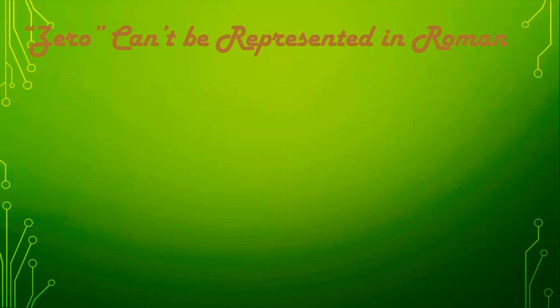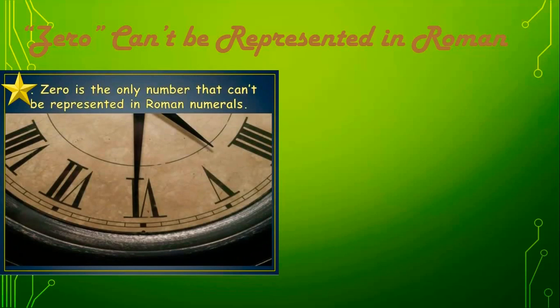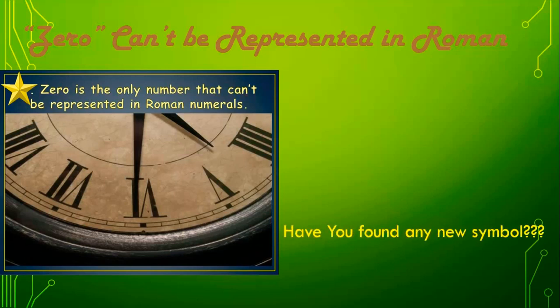Next, the number 0. Any number can be represented in Roman numerals — 2, 3, even 100 can be represented in Roman numerals. Like this, any number can be represented in Roman numerals. But there is no representation for 0 in Roman numerals. So, 0 cannot be represented in Roman numerals.